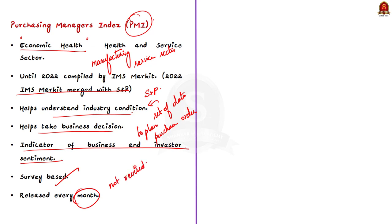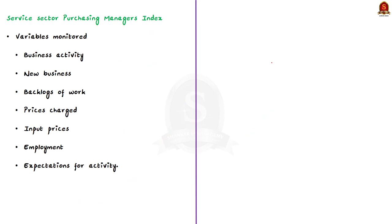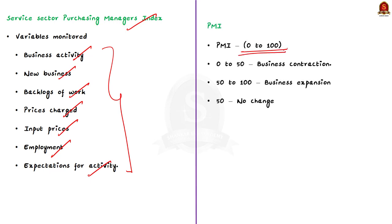There are two PMIs released for India: one for the manufacturing sector and one for the service sector. For manufacturing, the index monitors five variables: output, new orders, stock levels, employment and prices — of these, new orders has the highest weightage. For the service sector, PMI monitors business activity, new business, backlogs of work, prices charged, input prices, employment and expectations for activity. The PMI is a number from 0 to 100. A PMI above 50 represents expansion compared to the previous month, below 50 represents contraction, and a PMI of 50 indicates no change. The PMI for May 2022 is 54.6, indicating the Indian economy is expanding.